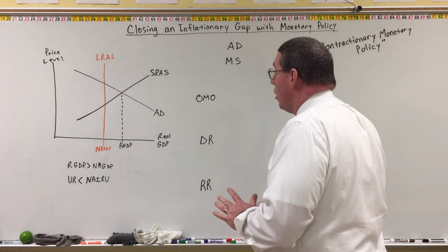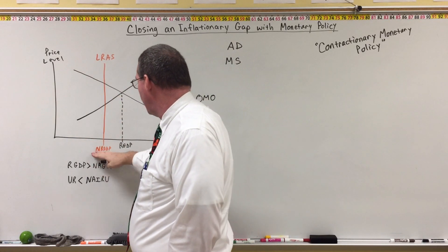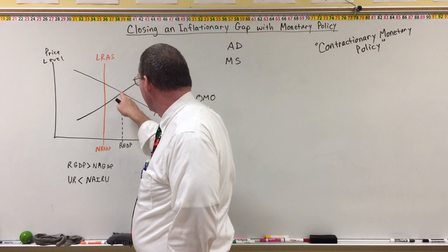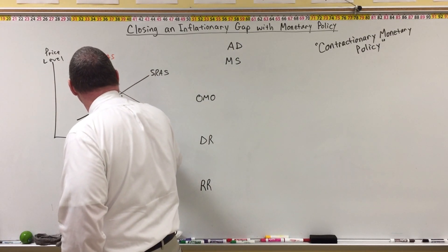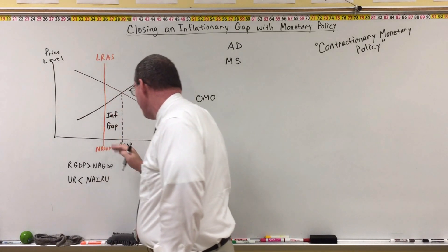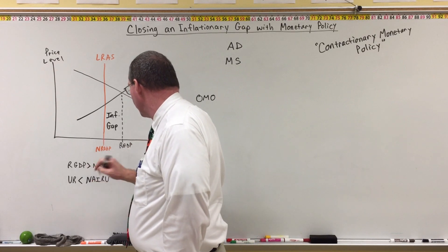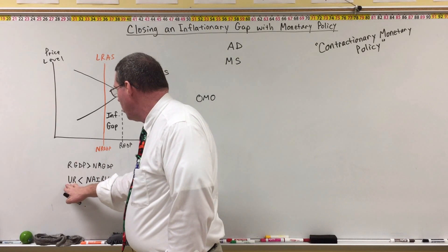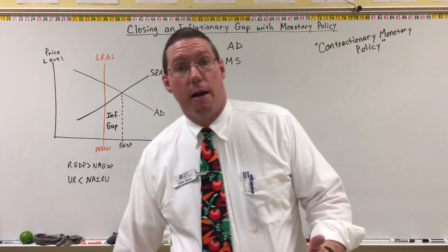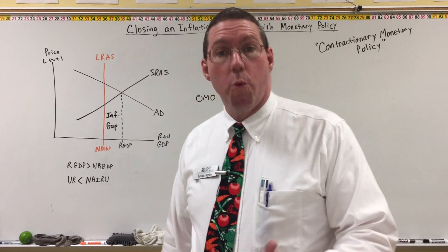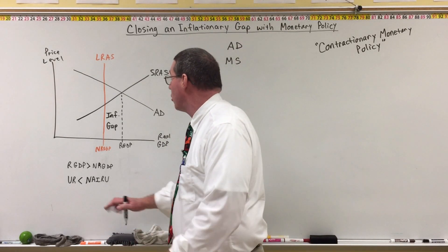Here's the circumstance: we've got an aggregate market graph. You can see long run aggregate supply and natural real GDP. The short run equilibrium is too high — we are overproducing, we are in an inflationary gap. Real GDP is greater than natural real GDP, which means our unemployment rate is lower than the natural rate of unemployment. That's not good for the economy — we are overusing our labor resources. We need to pull back on the economy.